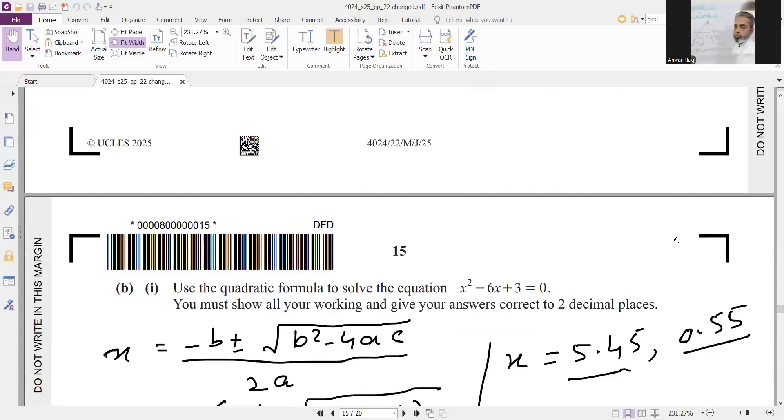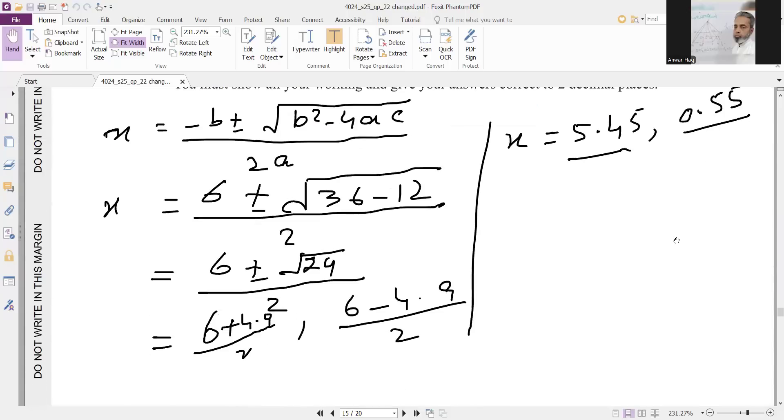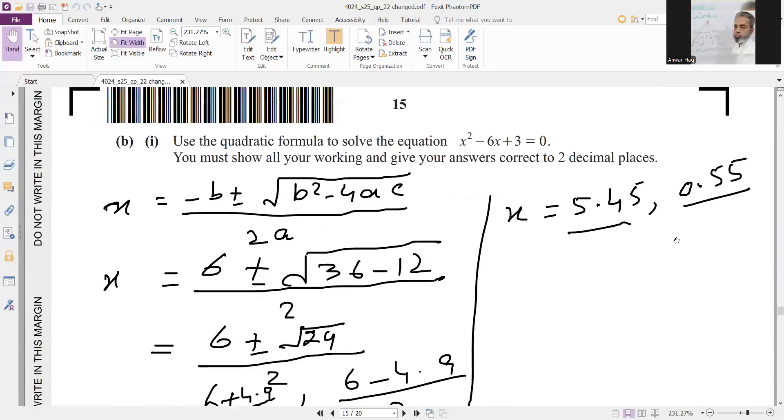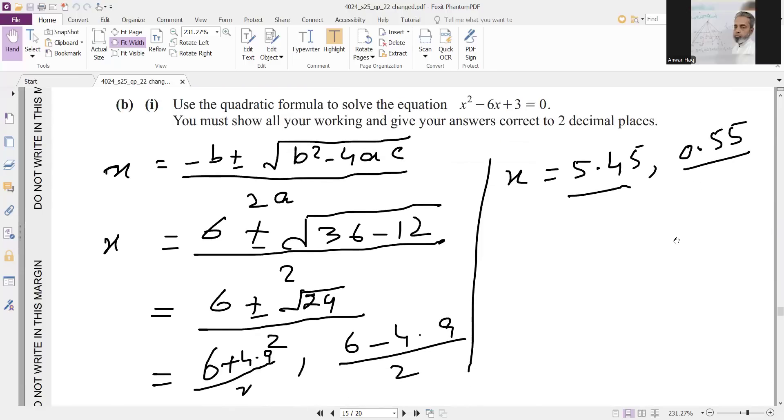Now in part b, use the quadratic formula to solve the equation x square minus 6x plus 3 equals 0 using quadratic formula. You will get x equals 5.45 and 0.55.